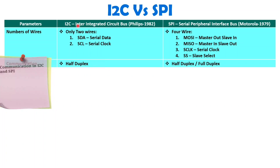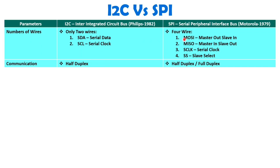When we talk about communication mode, I2C provides only half duplex communication since there is only one line for serial data. So either master can send data or master can read data — half duplex only. But with SPI protocol, you can have half duplex as well as full duplex communication. MOSI sends data from master to slave, and at the same time master can read data via MISO from the slave. So full duplex is possible with SPI.